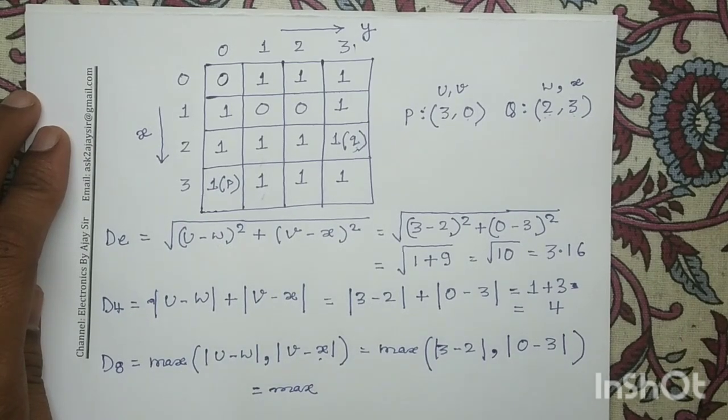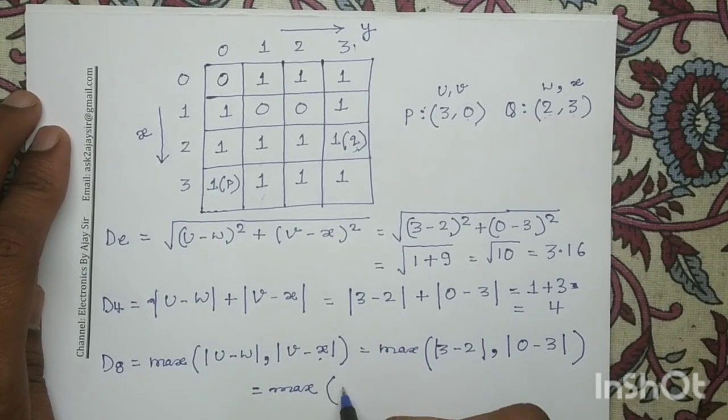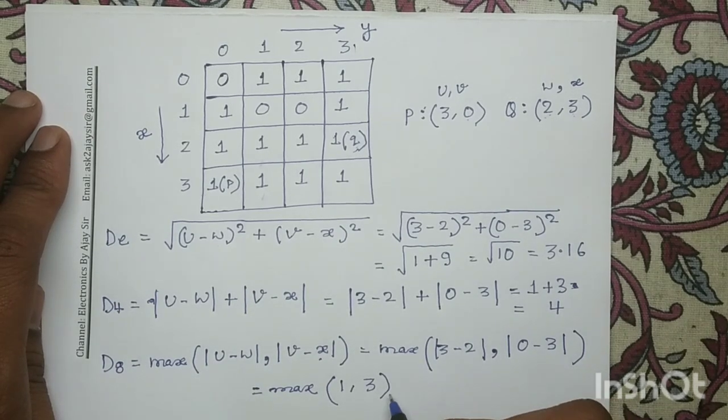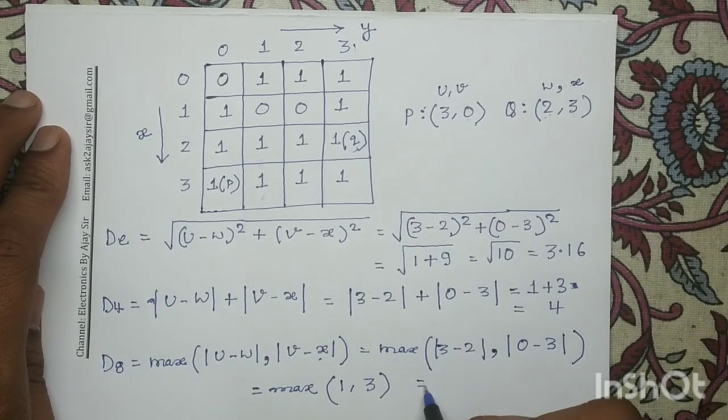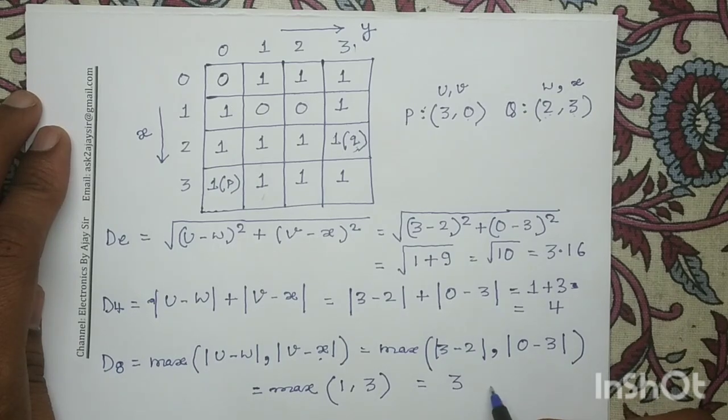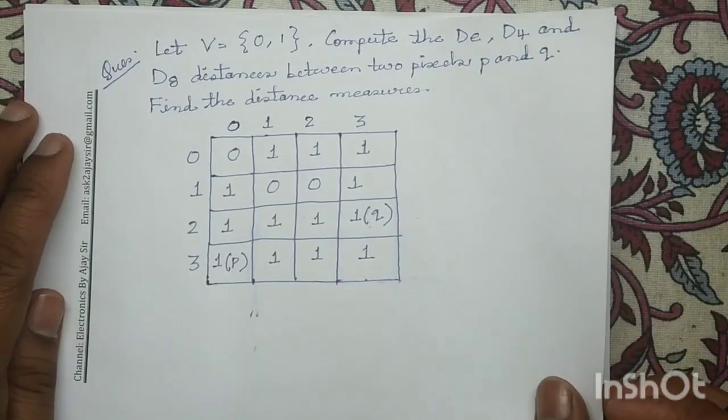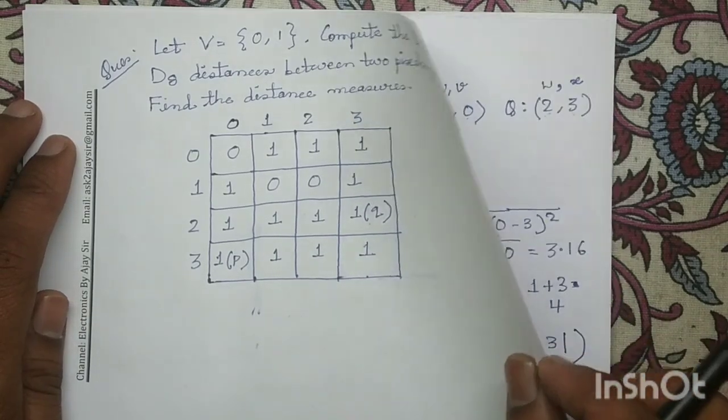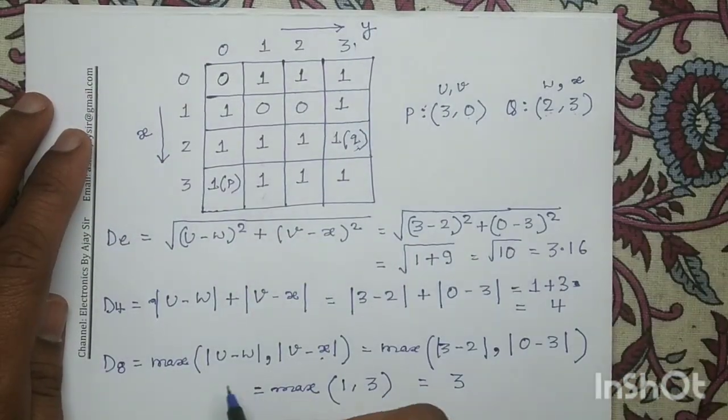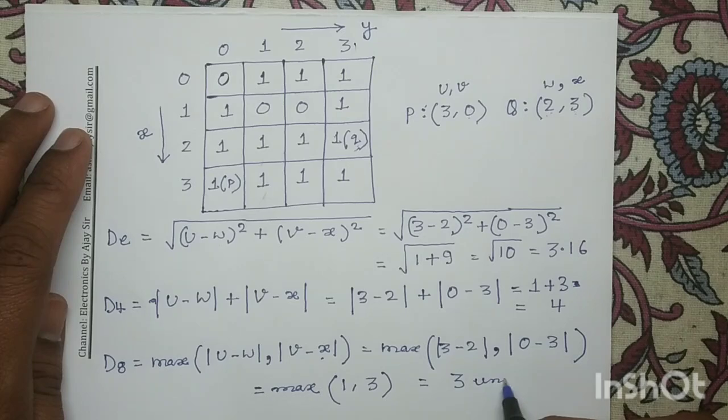maximum of 1, 3. And hence maximum of 1 and 3 is 3, so our answer is 3. Since the distance unit is not given here, we will write unit.